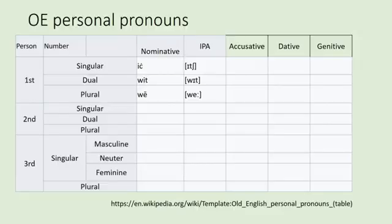Now let's talk about pronouns. Pronouns stand in for nouns — in modern English we have 'I,' 'me,' 'she,' 'he,' 'it.' They are one of the most commonly used word classes because they take the place of other words so frequently.